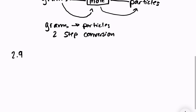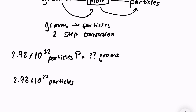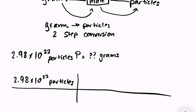Let's try the opposite direction. Let's say I have 2.98 times 10 to the 22nd particles of phosphorus, and I want to know how many grams are in that sample. I write out 2.98 times 10 to the 22nd particles, and my first step is to convert into moles — so moles goes on top of my conversion factor, and one mole equals 6.02 times 10 to the 23rd particles goes on the bottom so that particles cancel.